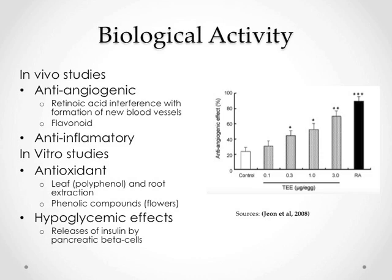Both in vivo and in vitro studies on rats exhibit antioxidant activities when dandelion root and leaf extracts are administered. Leaf and root extract contain a high content of polyphenols that provide protection from free radical formation. Phenolic compounds such as flavonoids and coumaric acids from the flowers also have antioxidant effects.